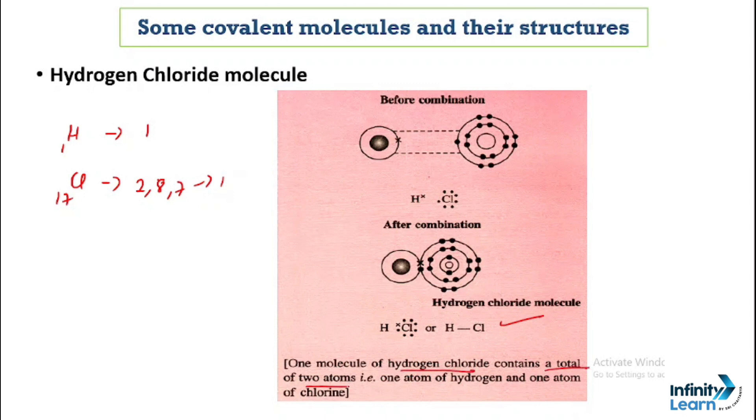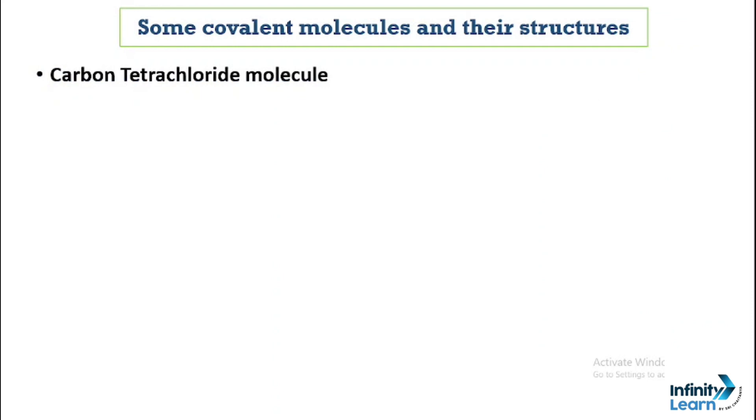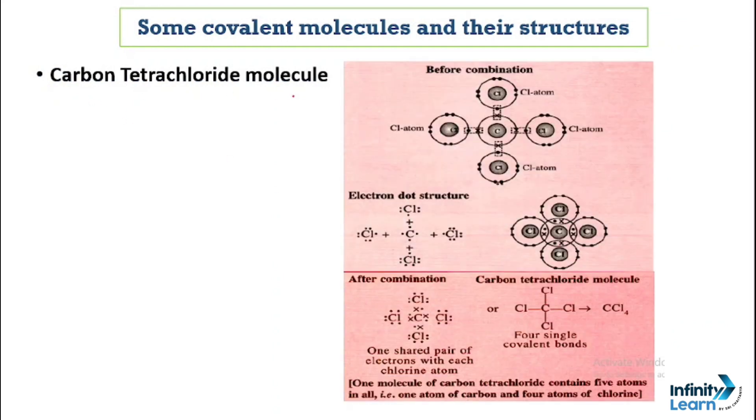At last, now we will see the fourth structure, which is carbon tetrachloride. Here we will see that carbon needs 4 electrons. So here a single covalent bond is formed. We will see 4 electrons pairs are shared between carbon and 4 chlorine atoms. So we will see 4 single covalent bonds.